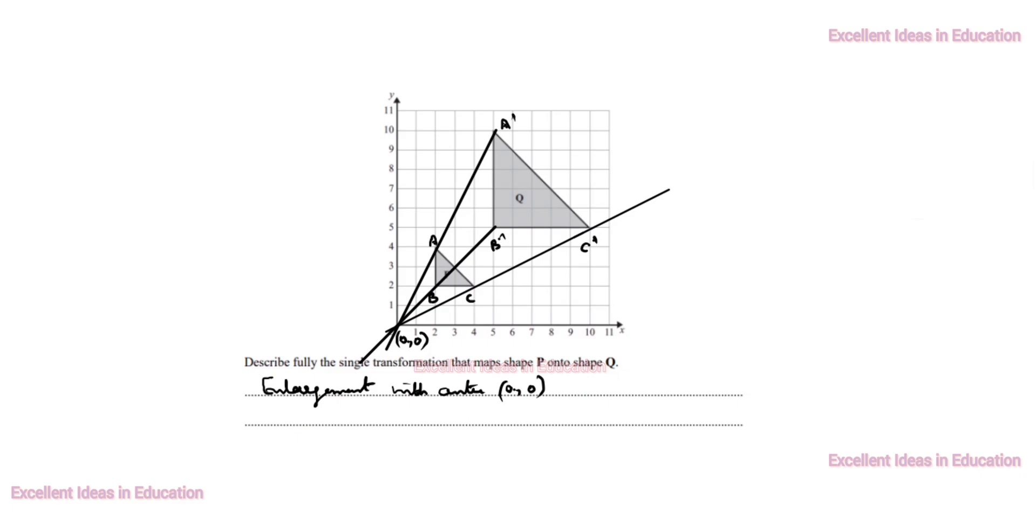Now, we will find scale factor. What is given: shape P onto shape Q. So, P to Q. We will find P to Q. P is smallest, Q is largest. So, you see here. First, we will take A, B and A dash, B dash.